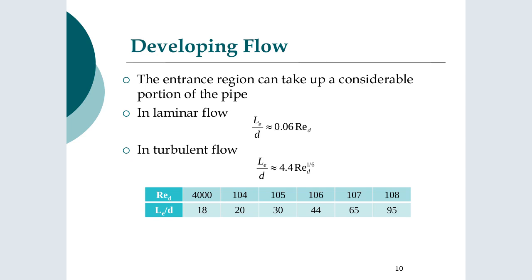In macro scale systems, this entrance region can take a considerable portion of the pipe. The laminar flow has a straightforward correlation, and it depends on the Reynolds number. In turbulent flow, it's a weaker dependence on the Reynolds number. Some values are worked out for particular Reynolds numbers — these should be 10 to the 4, 10 to the 5, 10 to the 6, 10 to the 7, 10 to the 8, etc. I need to correct that in some of the slides.